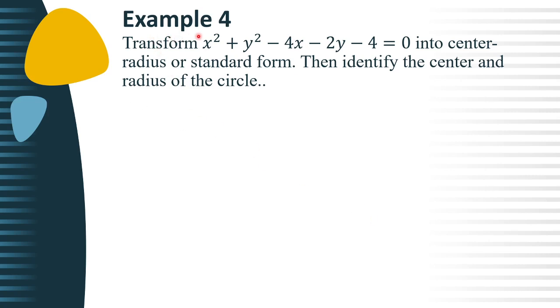Let's have example number 4. Transform x square plus y square minus 4x minus 2y minus 4 equals 0 into center-radius or standard form. Then, identify the center and the radius of the circle.